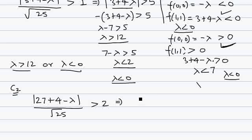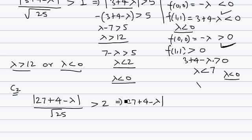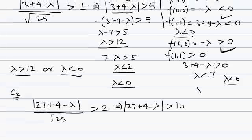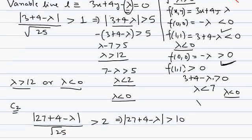This implies |31 minus lambda| should be greater than 10. Again we make two cases, looking at the position of the point with respect to the line. The point is different here, so we have to make two cases again.